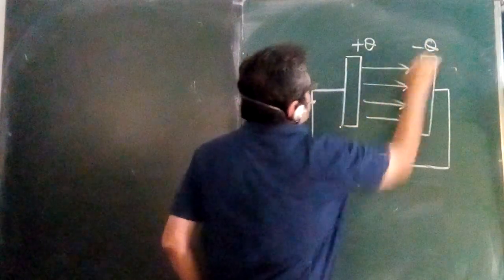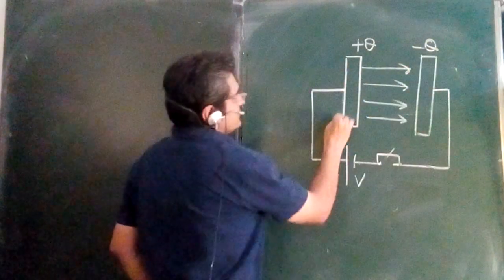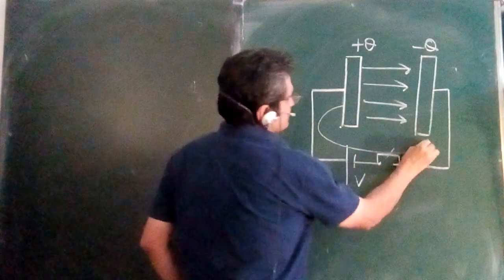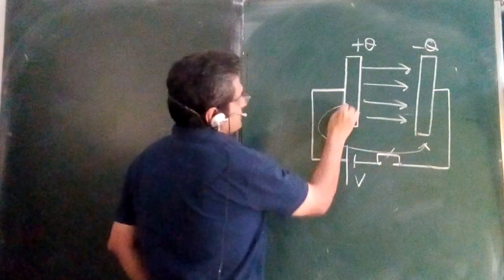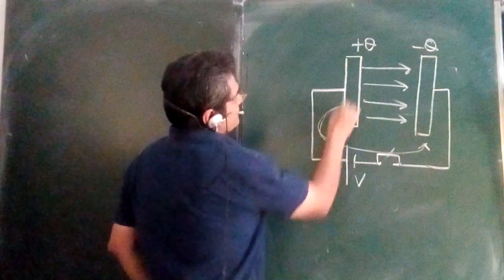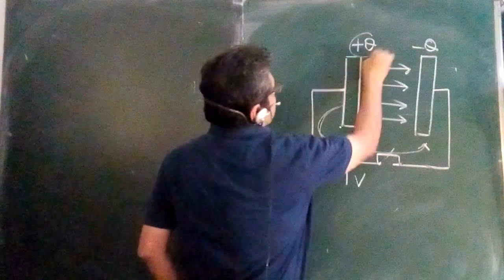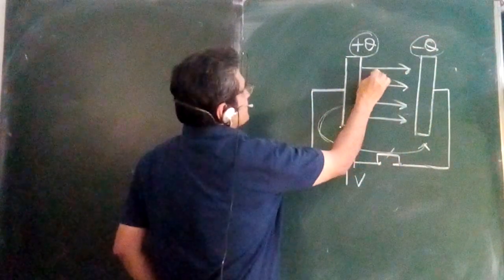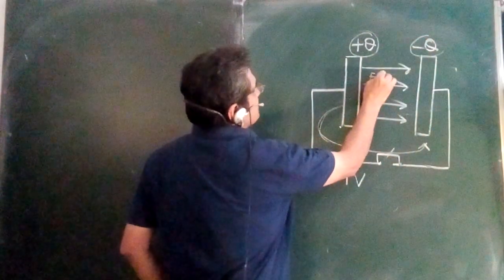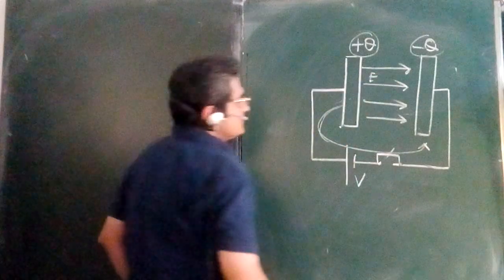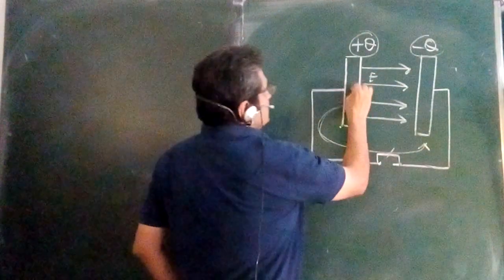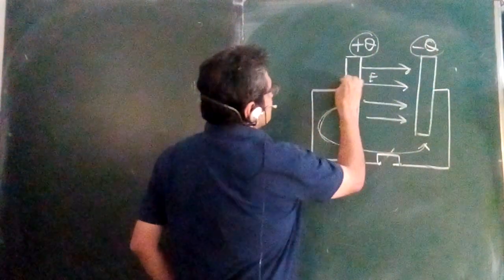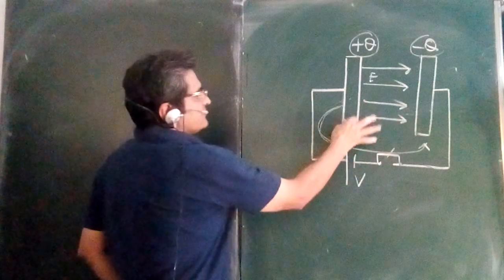Plus Q appears on one plate and minus Q appears on the other, because electrons have flown from one side to the other. That is why positive charge keeps developing on one plate and negative charge on the other, and the electric field keeps developing here.